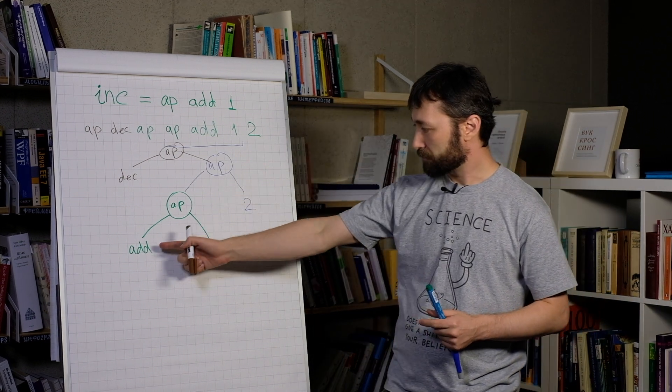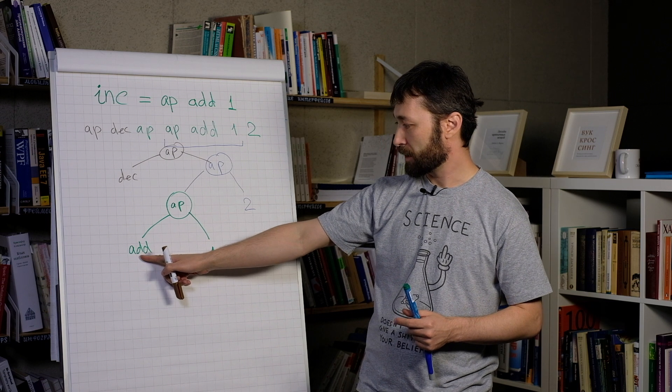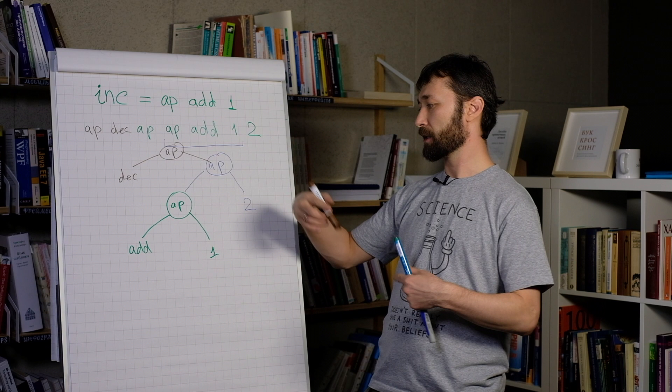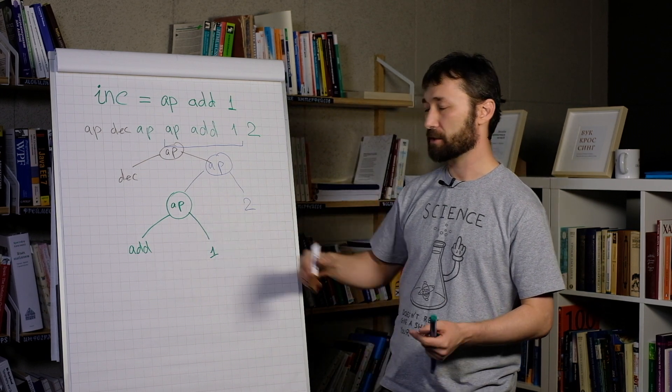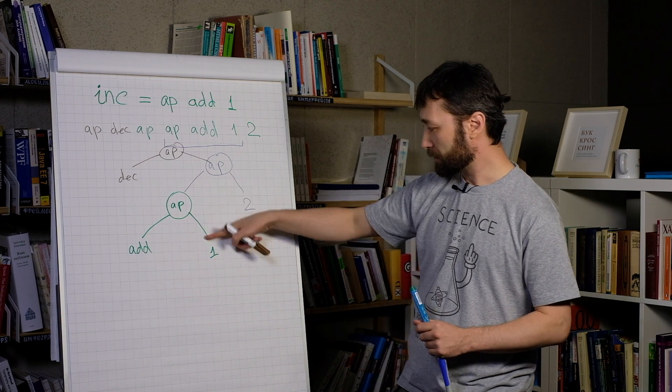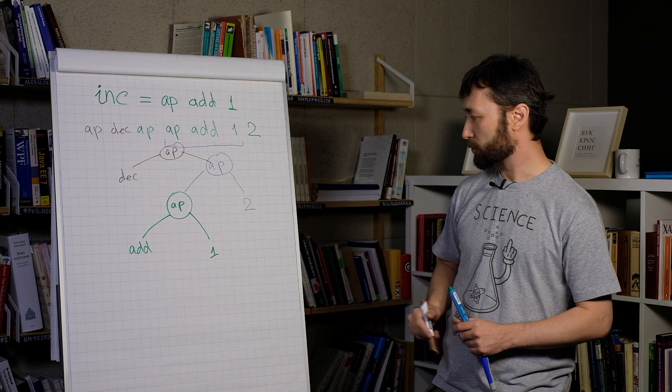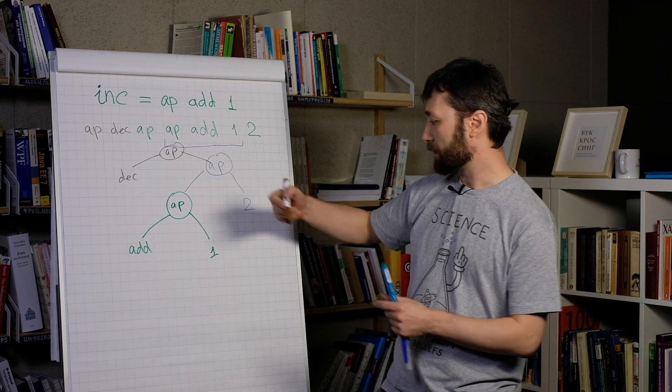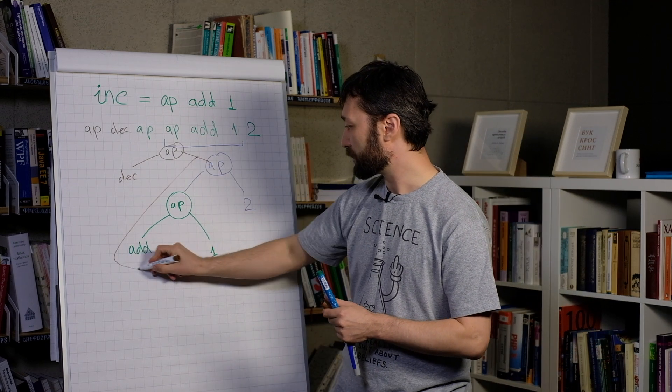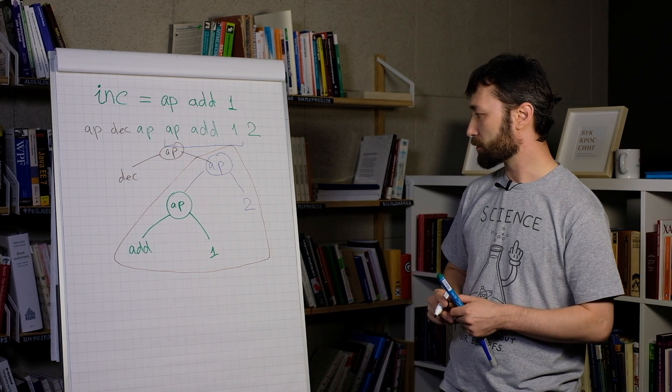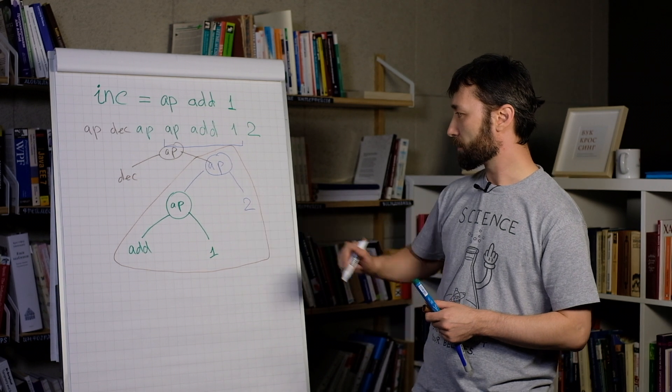We have add function. It has two arguments. Exactly as it defined. Add is defined as a two argument function. And add is defined on numbers. And yes, its arguments are numbers. So we can evaluate this subtree. And it will evaluate this subtree. And it will be evaluated to 1 plus 2, 3.